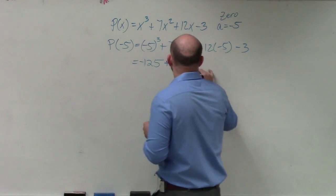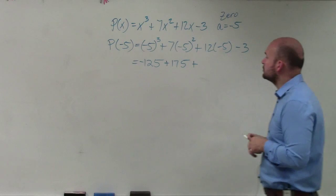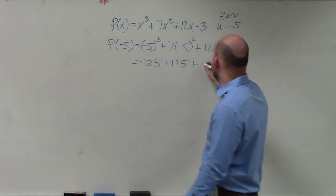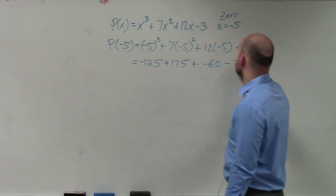And 12 times negative 5 is going to be negative 60 minus 3.